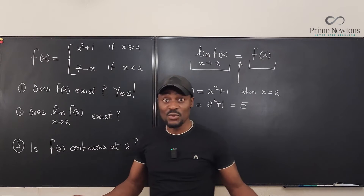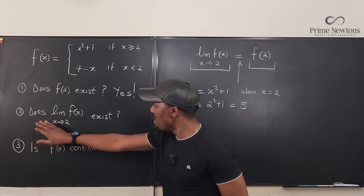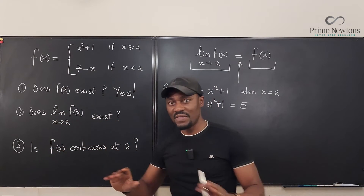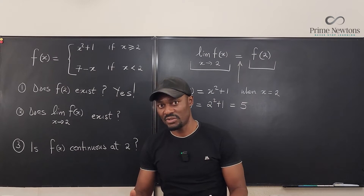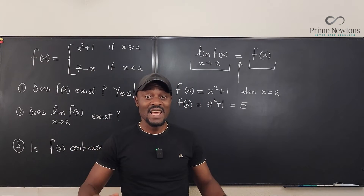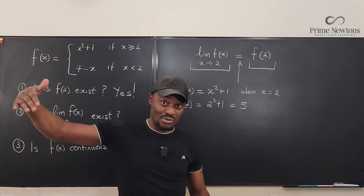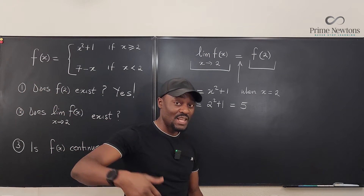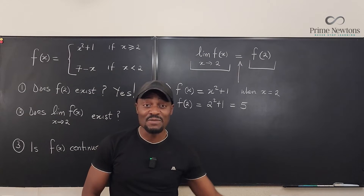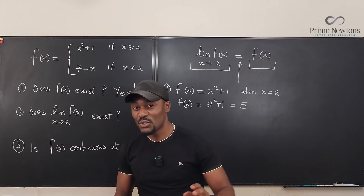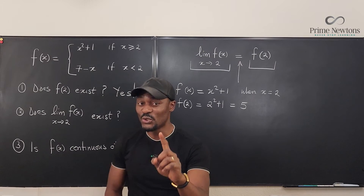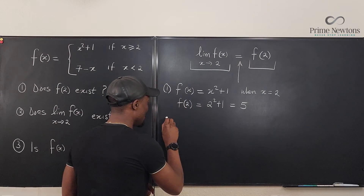The next question is: does the limit of the function as x approaches 2 exist? The limit of a function only exists if, as you approach that point from the right, you get the same value as when you approach it from the left. The point of interest is 2. So let's find the limit as x approaches 2 from the right.